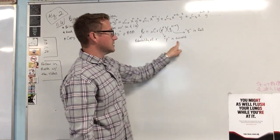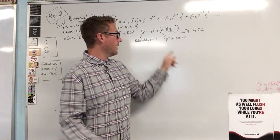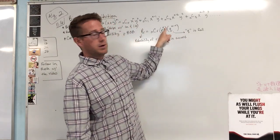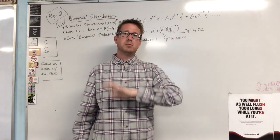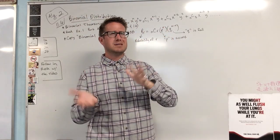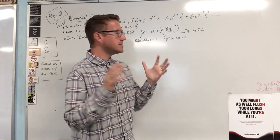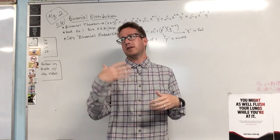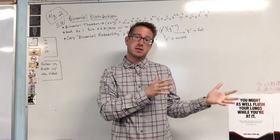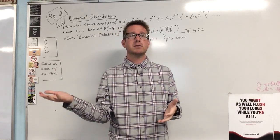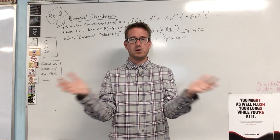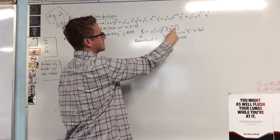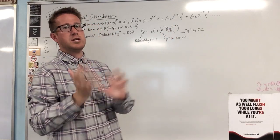P represents the probability of success, brought to the r power. Q is the probability of failure - what are the odds it's not going to happen? Those two things will always add up to one. For example, if there's a 25% chance of success, the probability of failure is 75%. The power for q is n minus r, so that's going to vary and change each time.